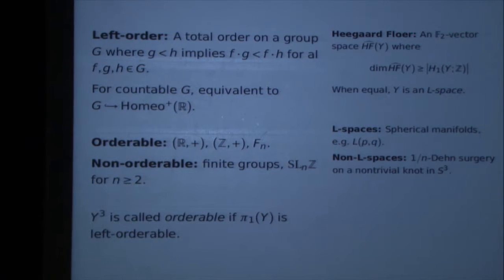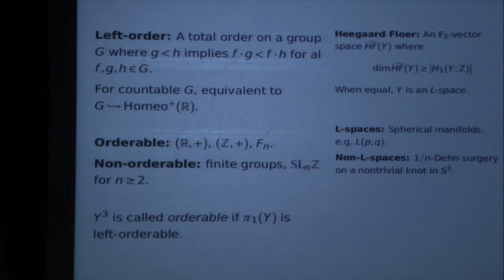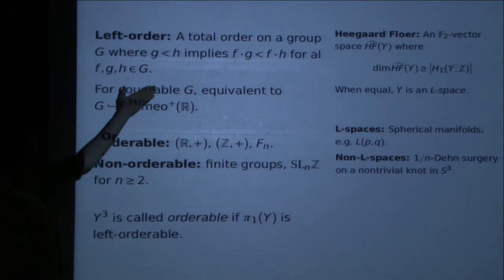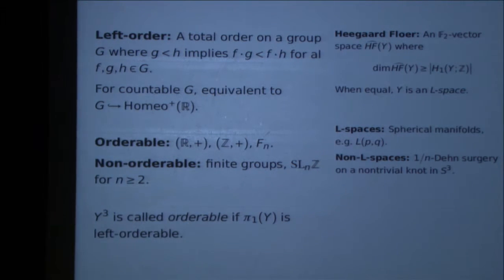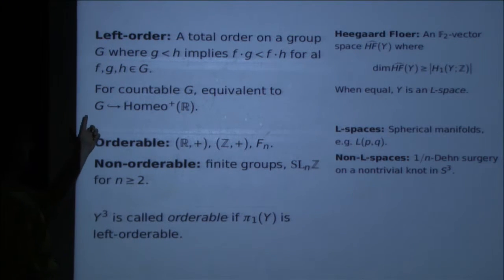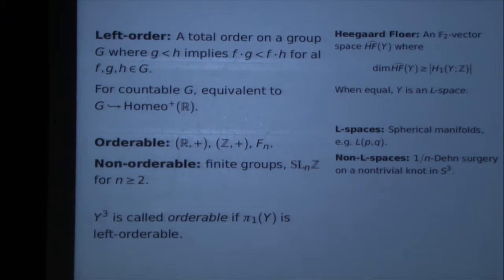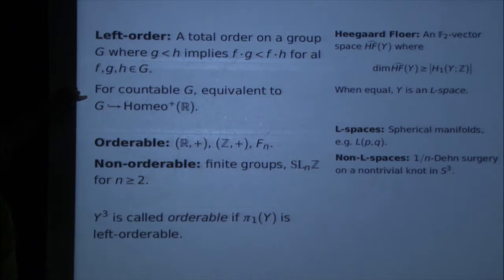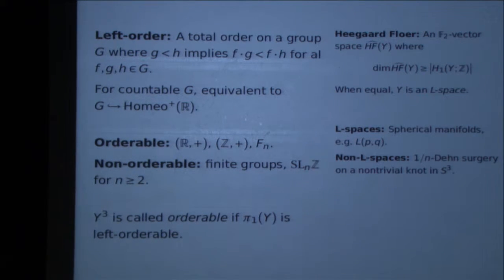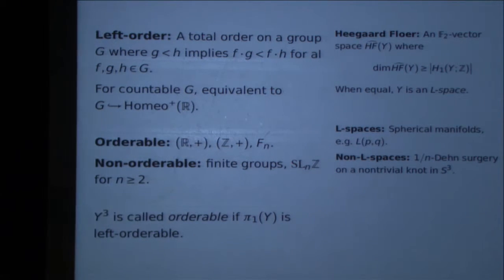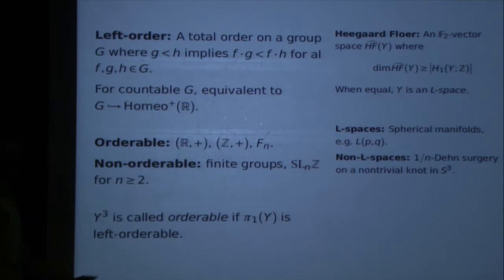The second concept in this conjecture is an order on a group. If I have a group G, a left order is just a total order on the elements which is invariant under left multiplication: if G is less than H, and you take another element F, then F times G has to be less than F times H. For a countable group, this is equivalent to saying that the group embeds in the group of orientation-preserving homeomorphisms of the line. A group is left orderable if it acts on the line faithfully by homeomorphisms. The simplest example is the real numbers under addition, and orderability passes to subgroups, so the integers are left orderable.